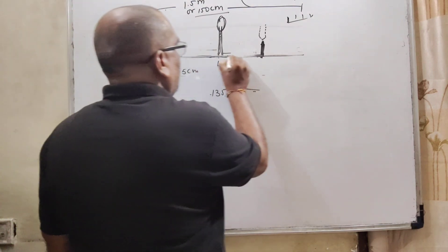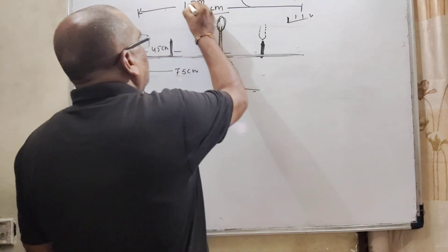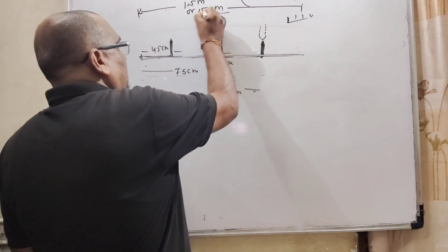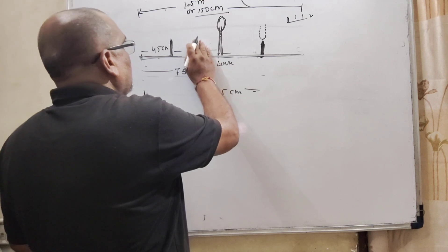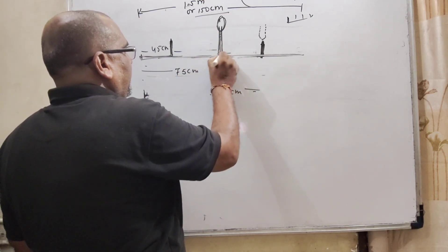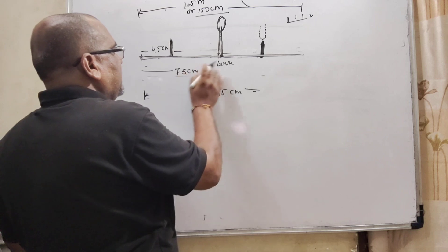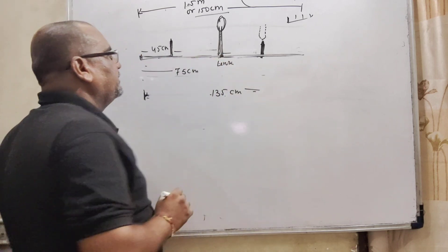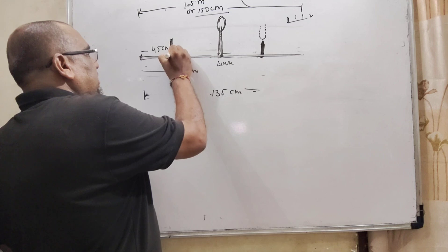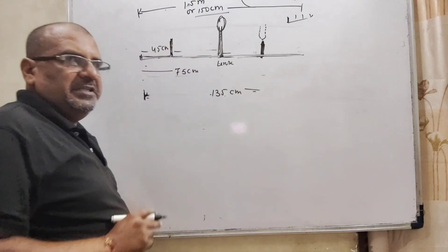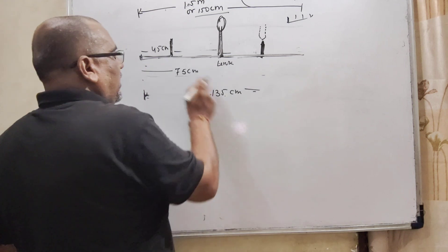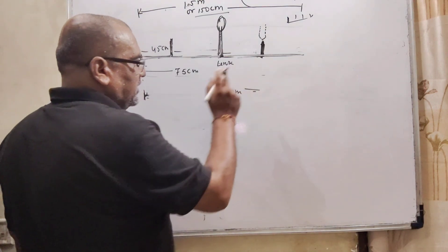Here we have given optical bench of length 1.5 meter, 150 centimeter. And this lens is fitted at 75 centimeter from the initial point. And this object pin is adjusted at 45 centimeter. And this image is formed from the initial point that is 135 centimeter.